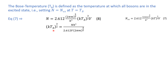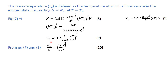From equation number 8, we can calculate the value of the Bose temperature, and by rearranging we obtain the Bose temperature Tb. Its value depends upon the number of particles per unit volume, which is why every material will have a different value of the Bose temperature. From equations 7 and 8, the ratio of the excited number of bosons to the total number of bosons is given by equation number 10, which depends upon the temperature T.